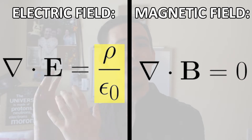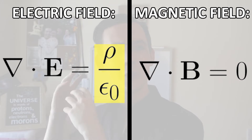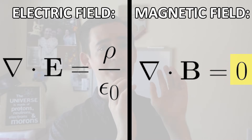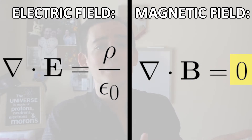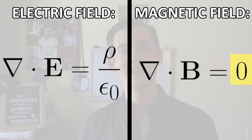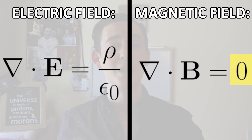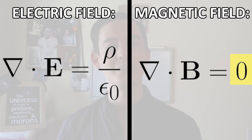So over here we have a term for an electric monopole, because we know they exist, and over here we just have zero for the magnetic monopoles, because we don't know if they exist. If we ever find a magnetic monopole, then we just have to replace this zero with some term to describe the magnetic monopole, and the equations would be updated and totally valid still.